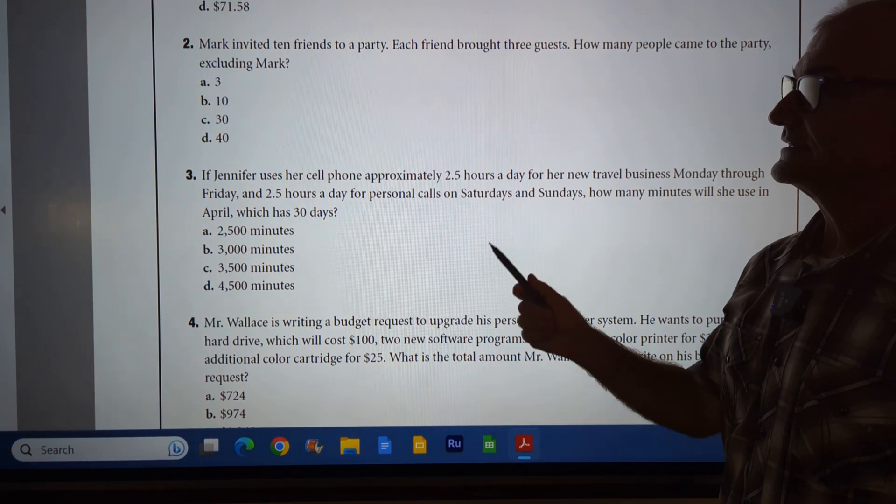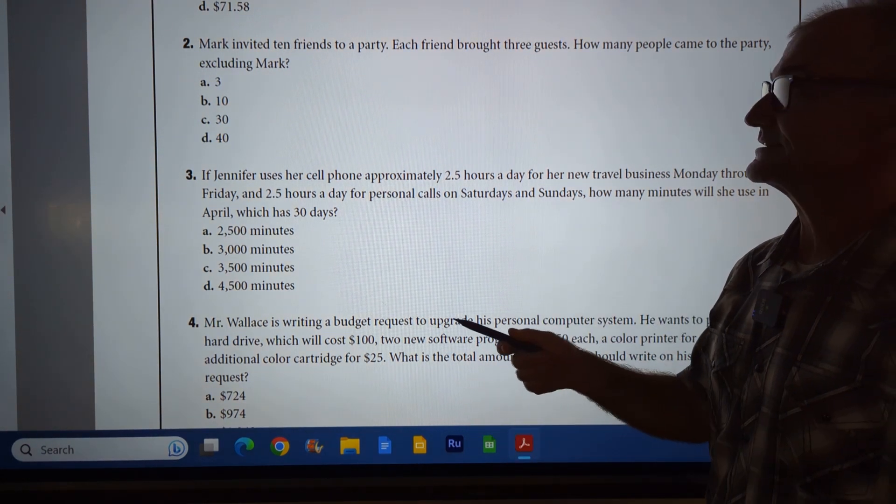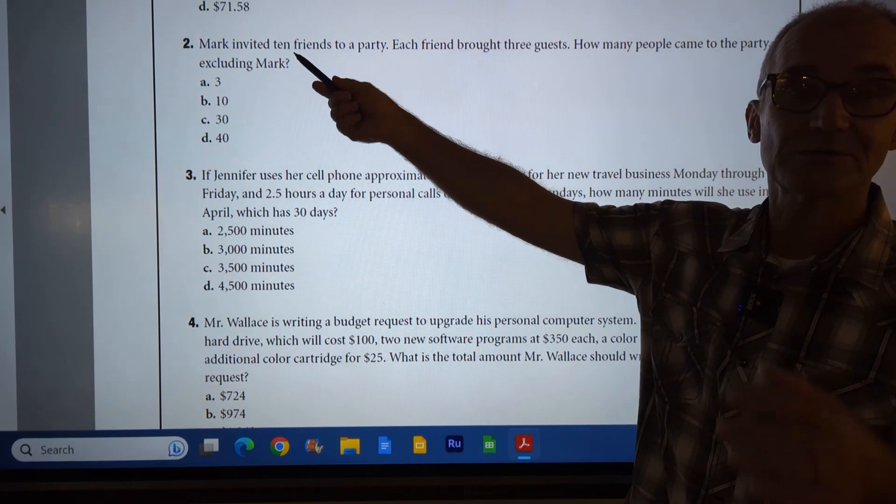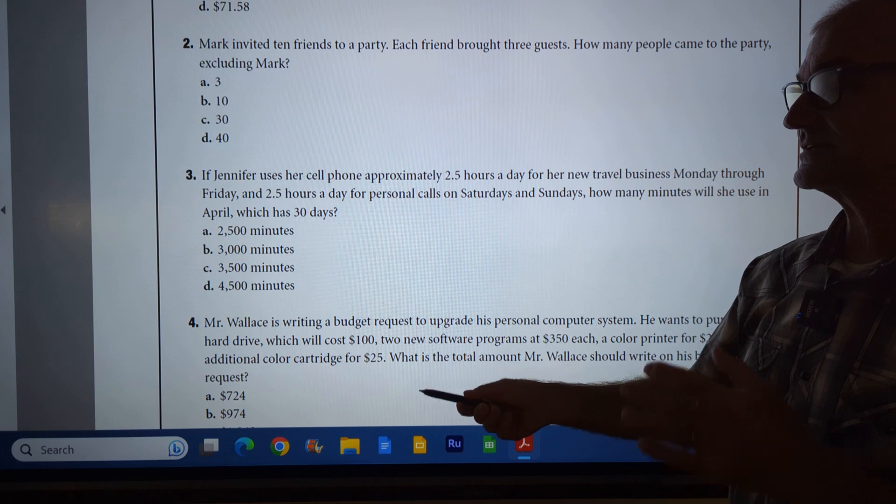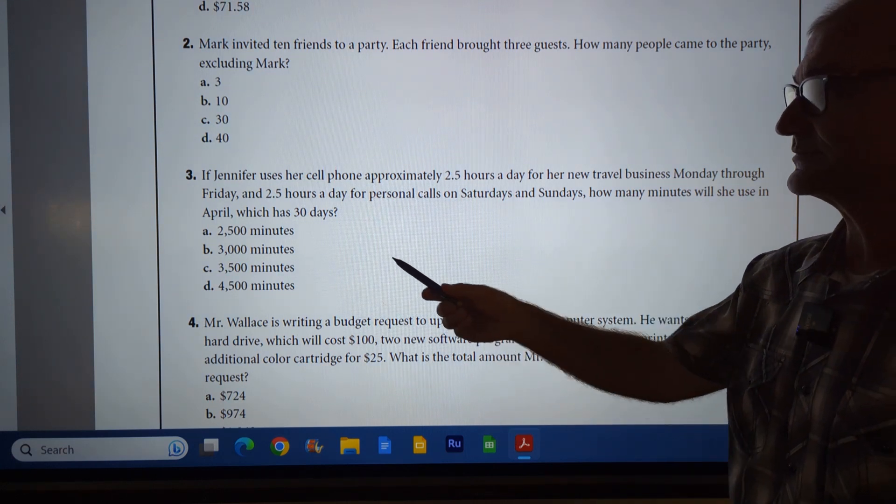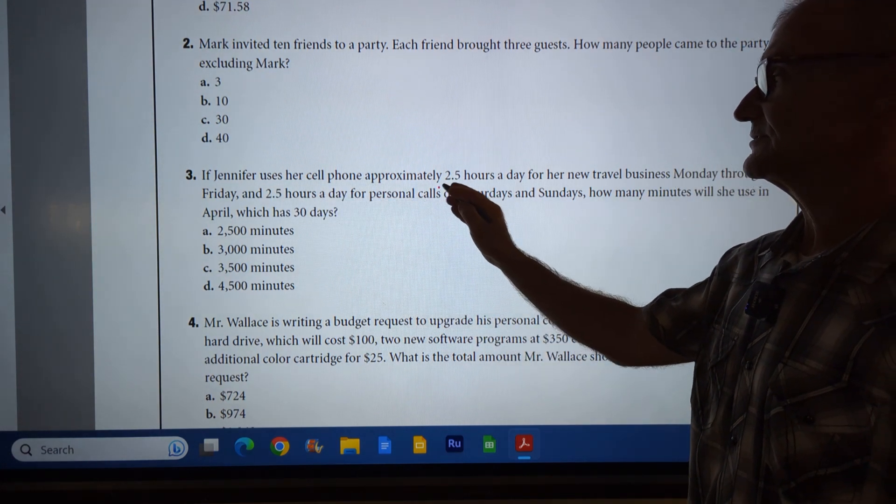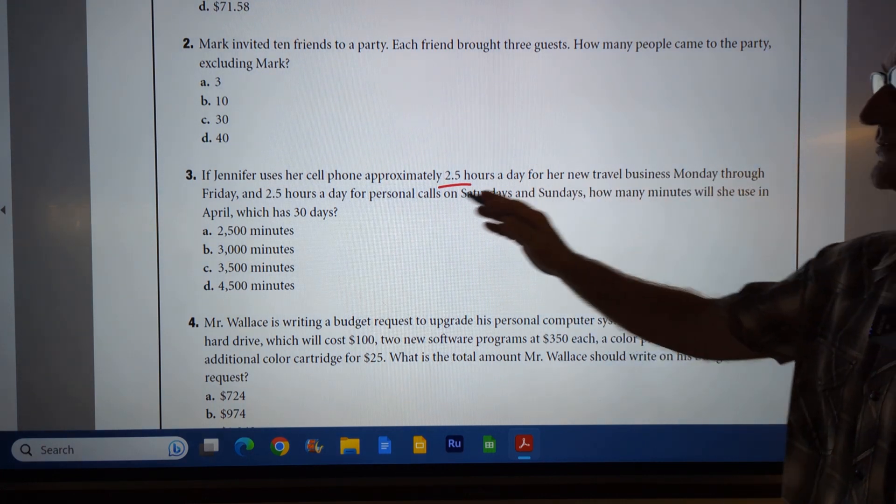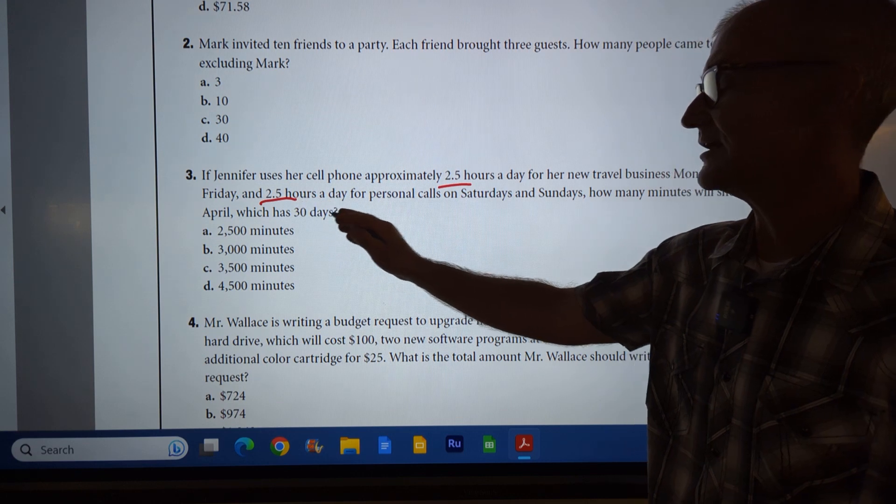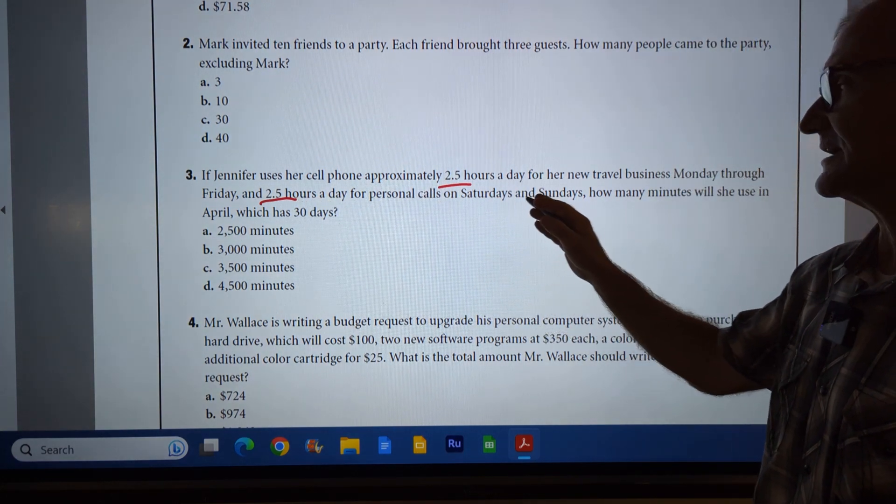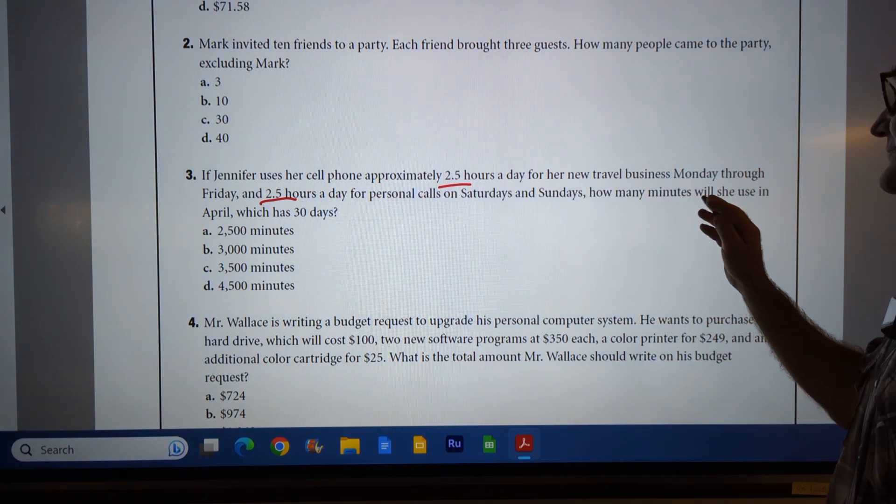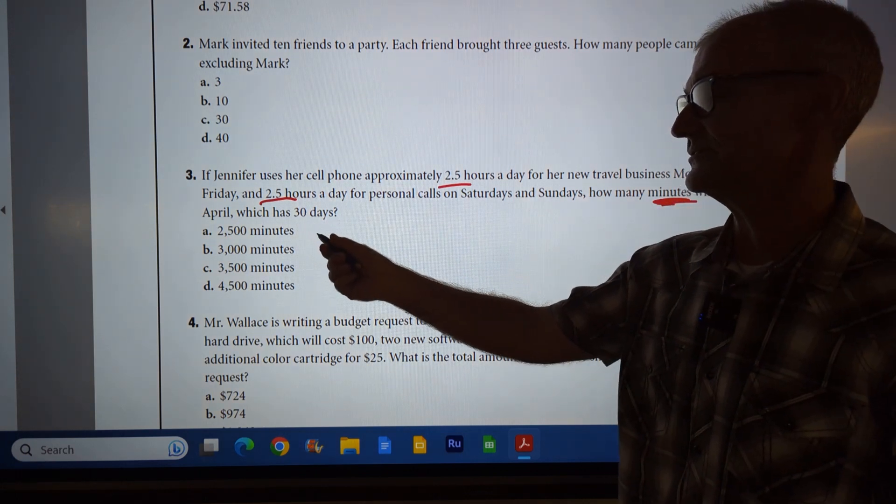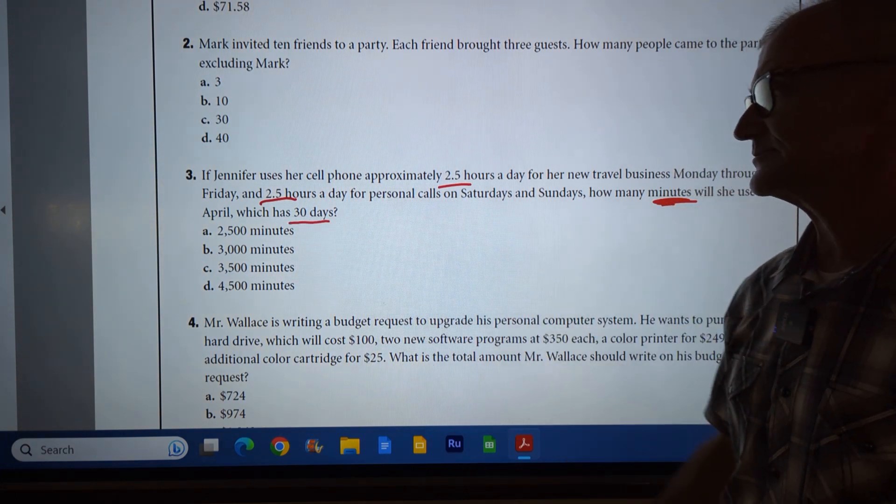Problem number three, a little bit, they keep adding a little bit more each time. First one's addition, second one's multiplication, and you got to decode the words to the numbers. Third one, there's going to be a lot more and more pieces in play. Jennifer uses her cell phone two and a half hours per day for travel business Monday through Friday, two and a half hours per day for personal calls on Saturday and Sunday. How many minutes will she use in April, which has 30 days? So those are my key numbers.